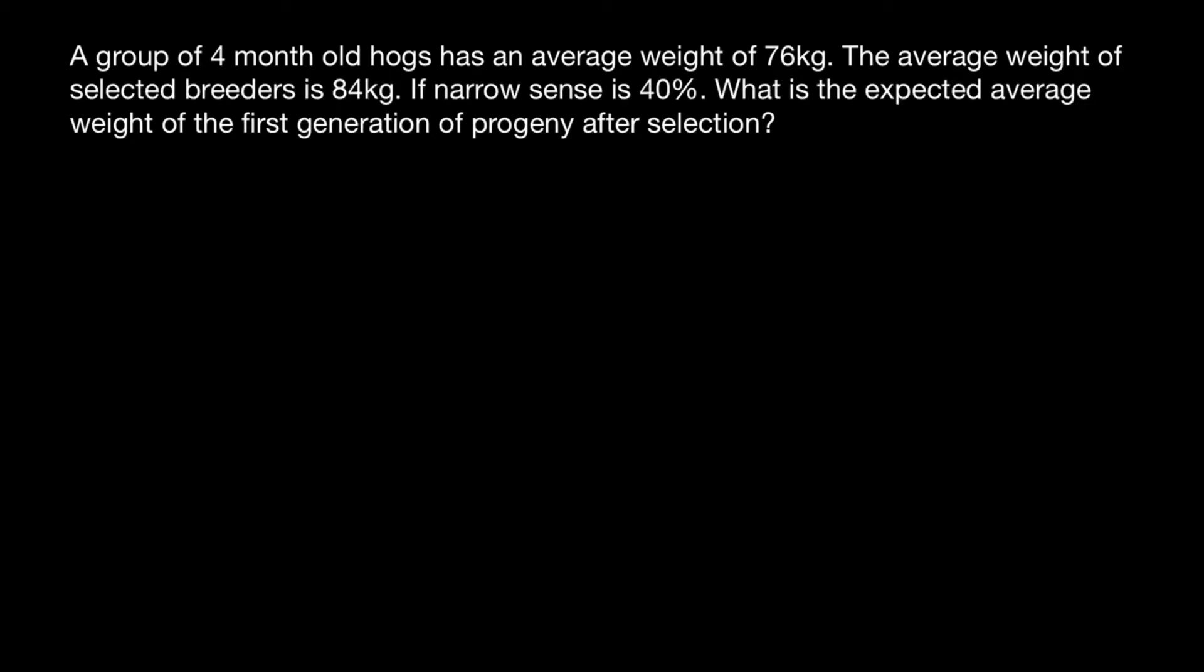Hello, and welcome to Nikolai's Genetics Lessons. This question I got from one of my subscribers. Here's the problem: A group of four-month-old hogs has an average weight of 76 kilograms. The average weight of the selected breeders is 84 kilograms. If narrow sense is 40%, what is the expected average weight of the first generation of the progeny after selection?